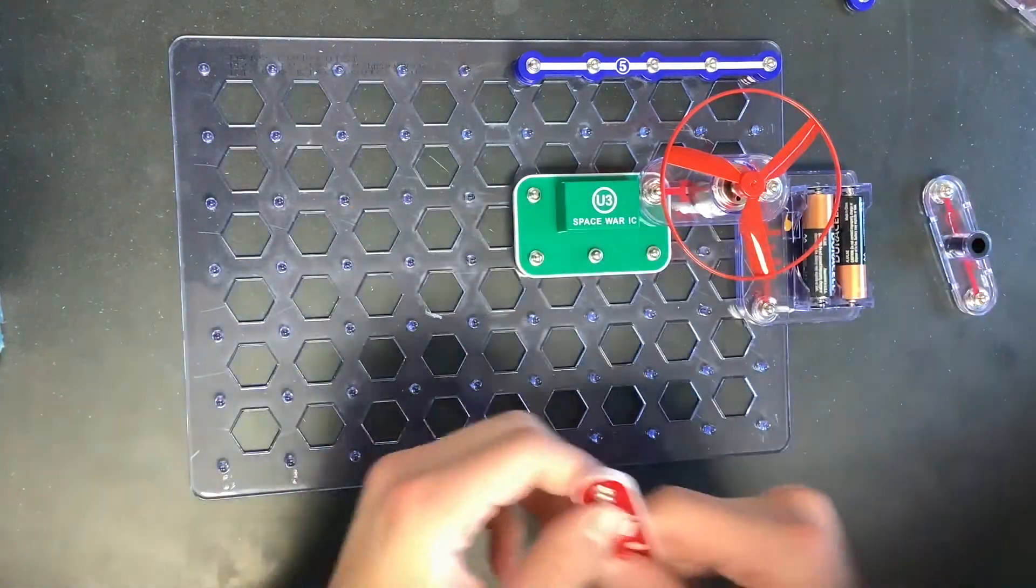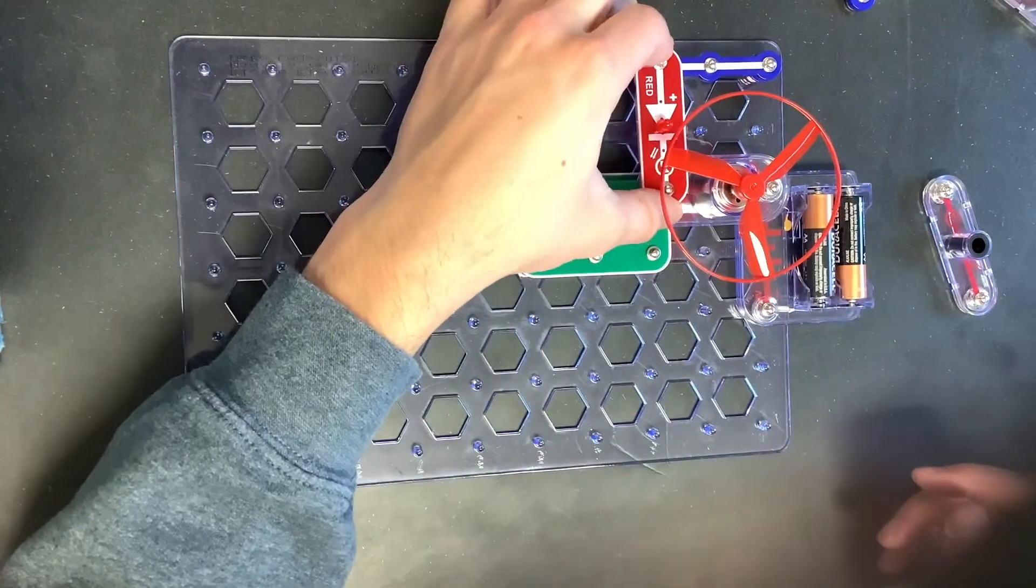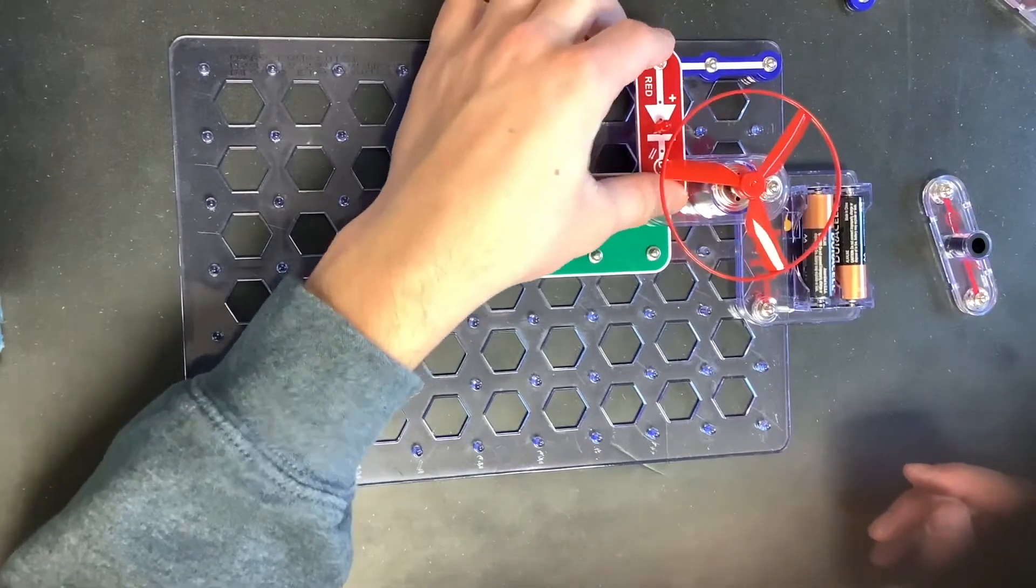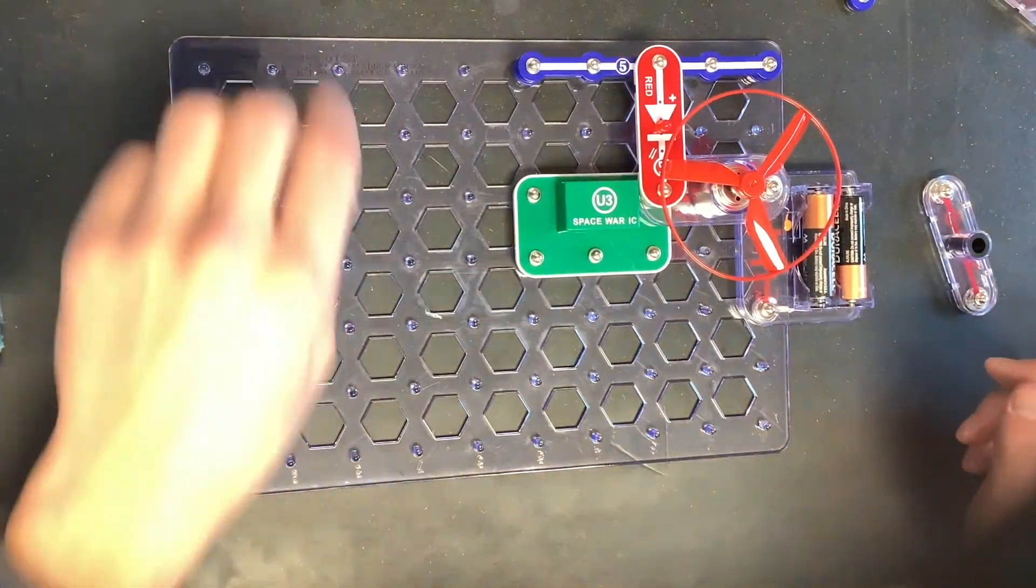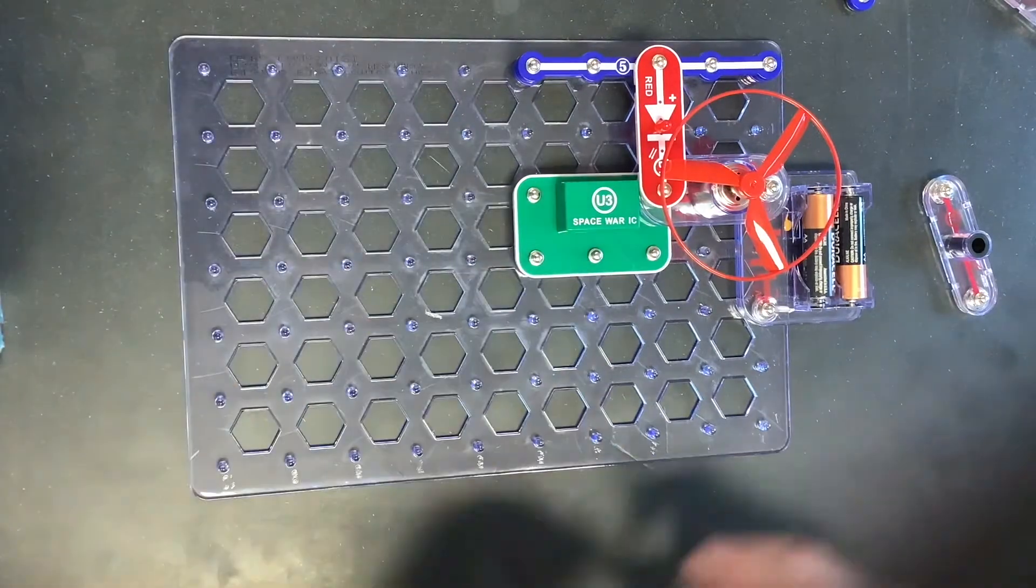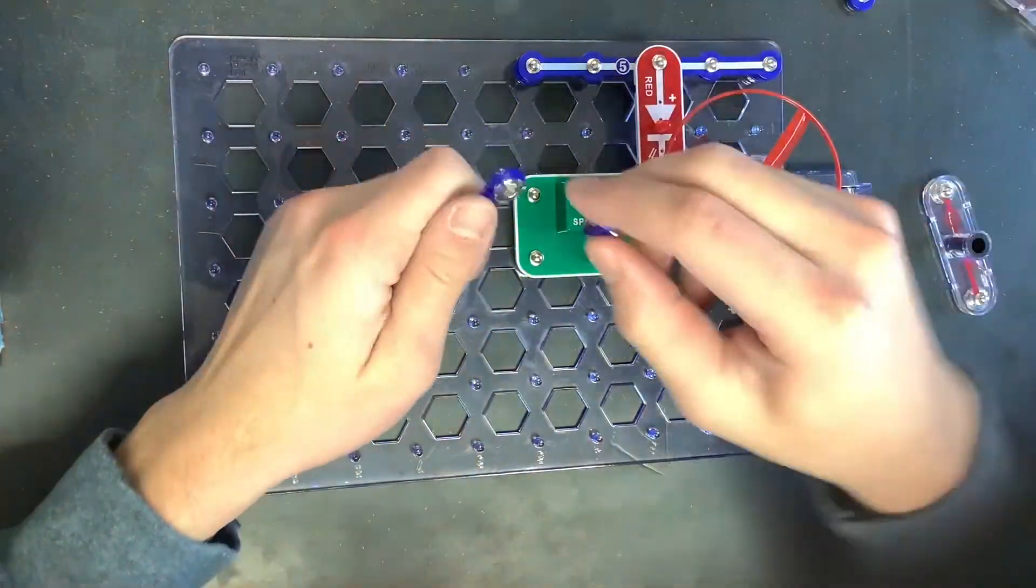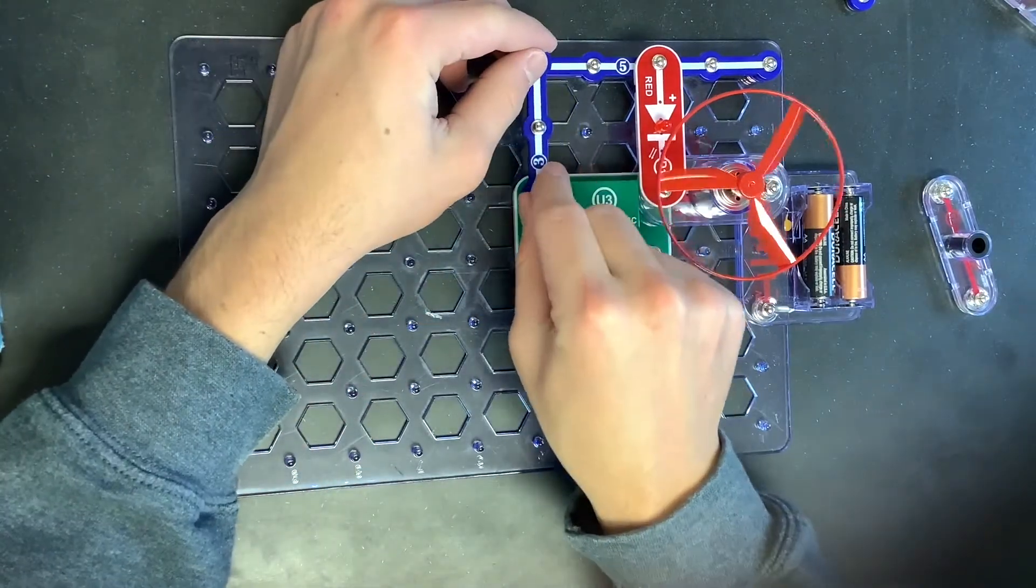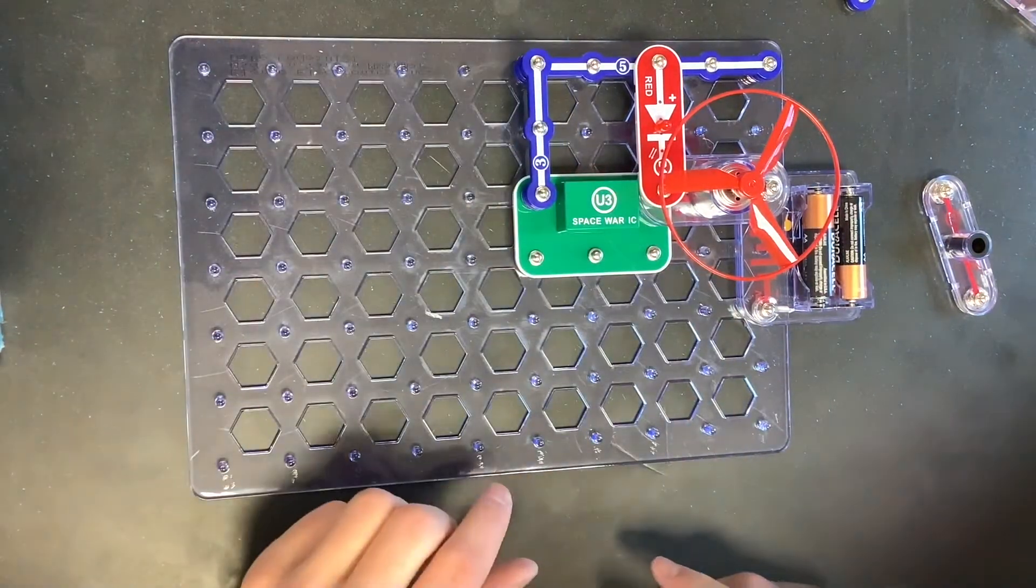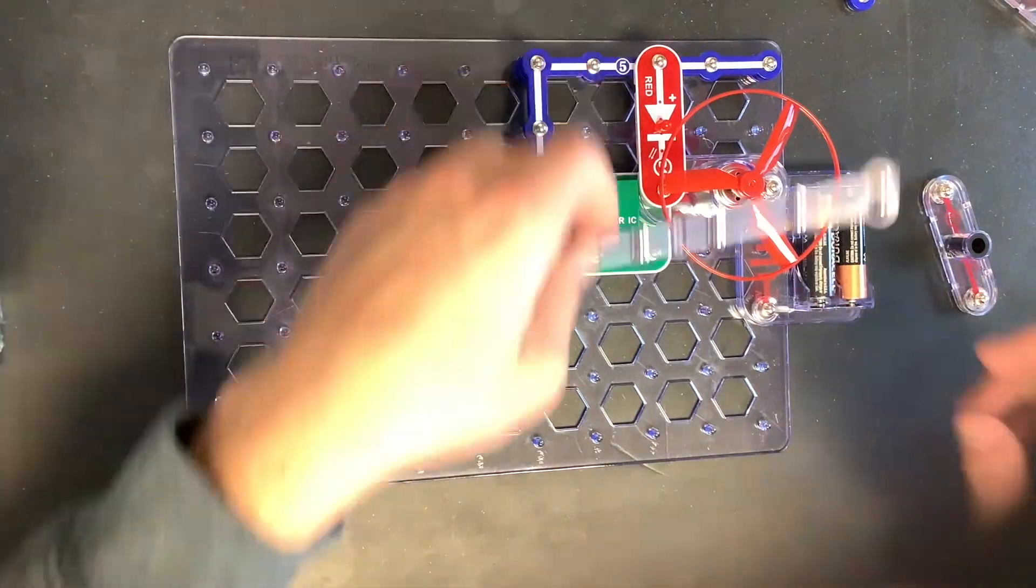So then from there, we're going to go ahead and connect a diode right there. It can be red or green.